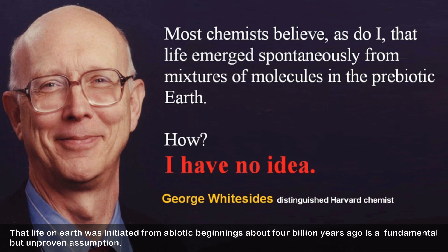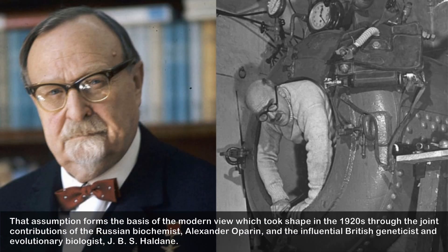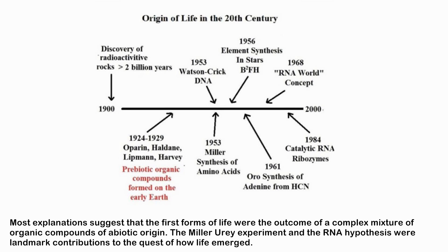That life on Earth was initiated from abiotic beginnings about four billion years ago is a fundamental but unproven assumption. That assumption forms the basis of the modern view which took shape in the 1920s through contributions of Russian biochemist Alexander Oparin and British geneticist J.B.S. Haldane. Most explanations suggest that the first forms of life were the outcome of a complex mixture of organic compounds of abiotic origin. The Miller-Urey experiment and the RNA hypothesis are landmark contributions to the quest of how life emerged.